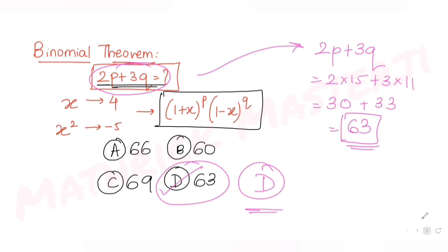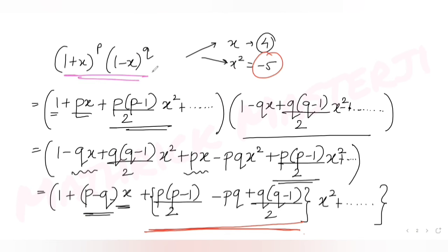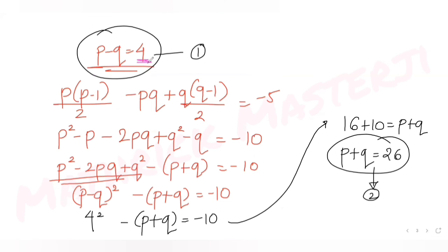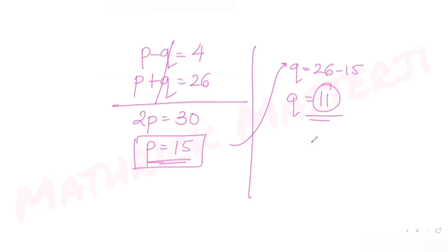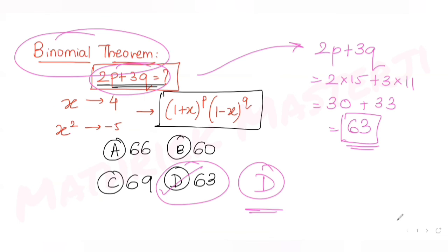I hope you understood how to solve this type of question on binomial theorem. We used the expansion of (1 plus x) raised to n, multiplied the two brackets, collected coefficients of x and x squared, equated them with the given values 4 and minus 5, solved for p and q, and substituted into the expression to get option D as the answer.